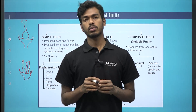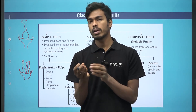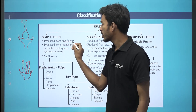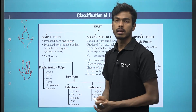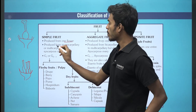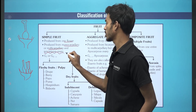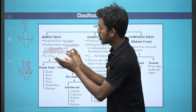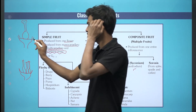This is a simple fruit. A simple fruit is produced from monocarpellary and multicarpellary syncarpus ovaries. This is a unicarpellary ovary and this is a multicarpellary syncarpus ovary.